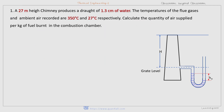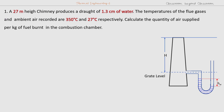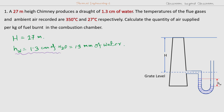The first problem: a 27-meter high chimney produces a drop of 1.3 centimeter of water. The temperature of the flue gases and the ambient air are 350 degrees centigrade and 27 degrees centigrade respectively. We have to calculate the quantity of air supplied per kg of fuel burned in the combustion chamber. From the problem, the height of the chimney H is equal to 27 meters. The drought produced is measured by manometer and is equal to 1.3 centimeter of water, that is 13 millimeter of water, also equal to 13 kg per meter square.